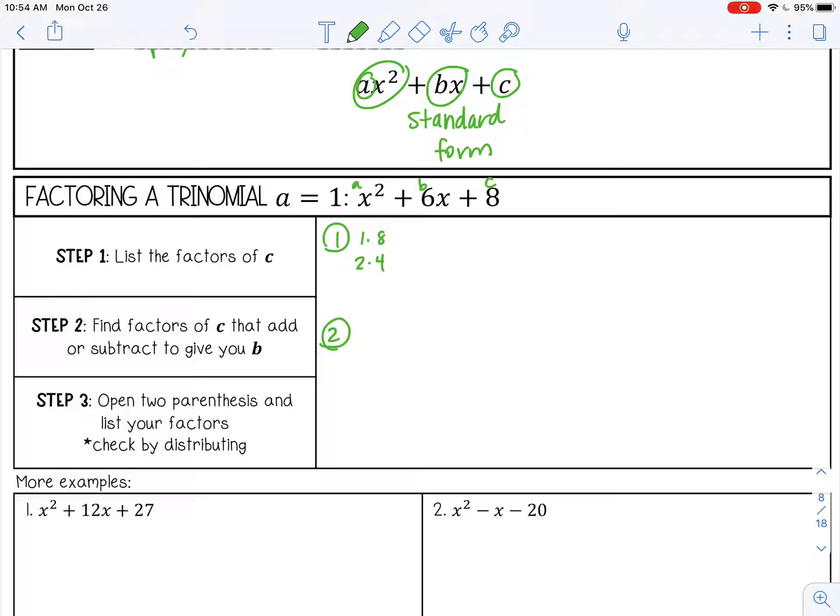Next, we're going to find a pair of factors that we listed from number 1, the factors of c. And we want those factors to add or subtract to give us b, that coefficient of 6. So 1 plus 8, that's not going to give me 6. 2 plus 4 is going to give me 6. So those are the factors that I want.